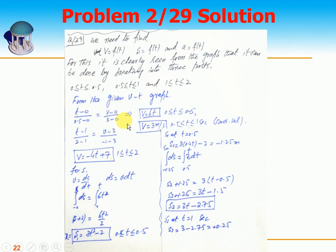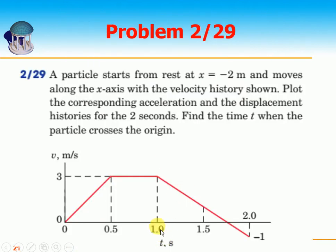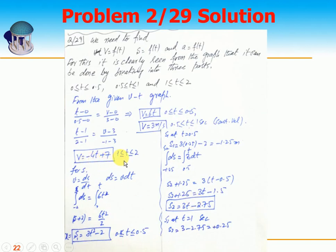For the first part, v equals 6t. For the next part from 0.5 to 1 second, velocity is constant at 3 meters per second. For the decelerating part from 1 to 2 seconds, at t equals 1 the velocity is 3 and at t equals 2 the velocity is minus 1. The relationship for this interval is v equals minus 4t plus 7.